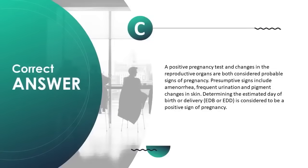Presumptive signs include amenorrhea, frequent urination, and pigment changes in skin. Determining the estimated day of birth or delivery (EDB or EDD) is considered to be a positive sign of pregnancy.